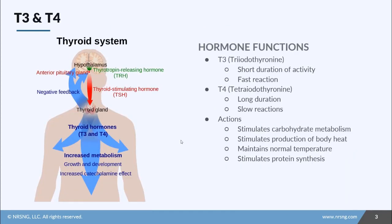Let's look at how T3 and T4 work in the body. T3 and T4 are secreted in the thyroid gland, but what stimulates that? There's a thyroid stimulating hormone, and what stimulates that is the thyrotropin releasing hormone — and that's all stimulated by the hypothalamus.